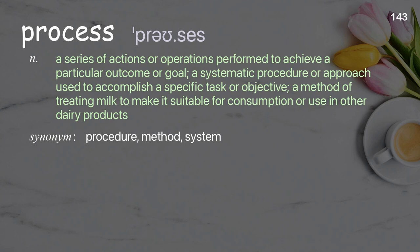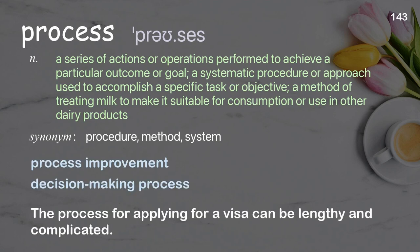Process: a series of actions or operations performed to achieve a particular outcome or goal; a systematic procedure or approach used to accomplish a specific task or objective; also a method of treating milk to make it suitable for consumption or use in dairy products. Examples: process improvement, decision-making process. The process for applying for a visa can be lengthy and complicated.